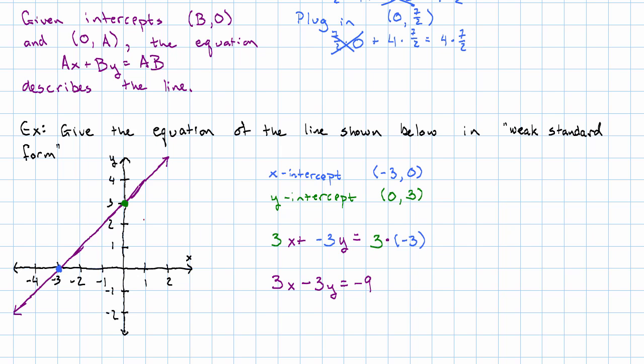For example, if I took this point, which is on the line negative 1, 2, and I plugged it in: 3 times negative 1 minus 3 times 2. Well, that's negative 3 minus 6, which really is negative 9, which we would have hoped to see. This equation really does describe the line that we're looking at in the picture.